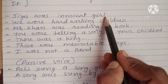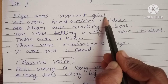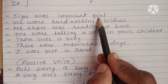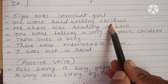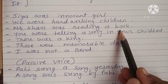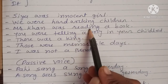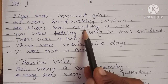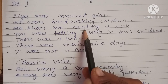ભૂતકાળ દર્શાવવા માટે was/were નો ઉપયોગ કરવામાં આવે છે. ક્રિયાપદ સાથે પણ આવી શકે, અને verb સાથે -ing લગાડીને પણ આવી શકે — past continuous બનાવવા માટે.